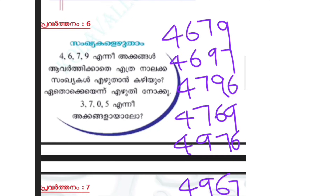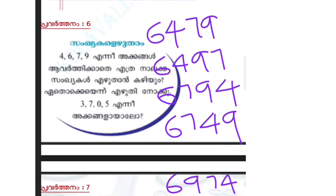Now numbers starting with 6: 6479, 6497, 6794, 6749, 6974, 6947.